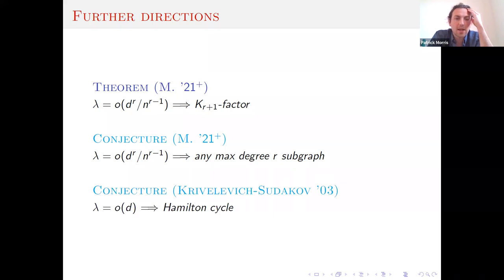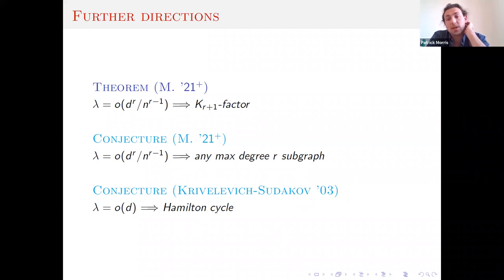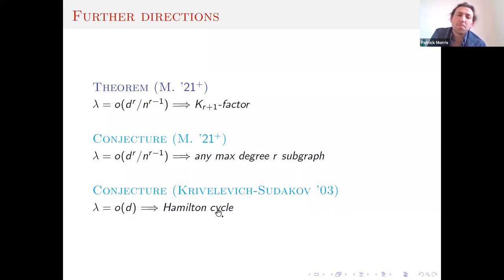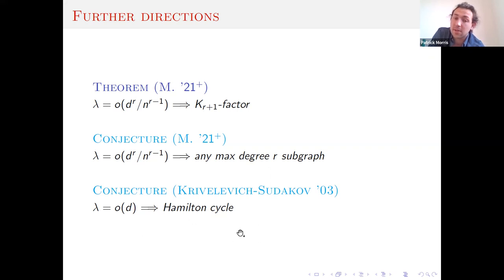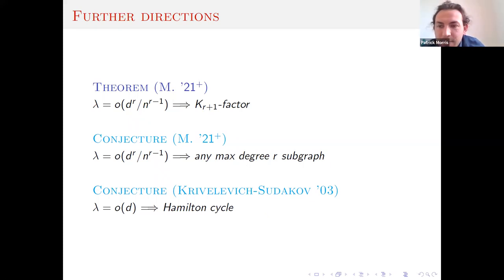As for upper bounds, for larger cliques we can picture that the same condition should give not just a clique factor but any maximum-degree-R subgraph, though I expect this to be much harder than the triangle case since we know the structure of max-degree-two graphs. Finally, for other spanning structures like Hamilton cycles, it was conjectured by Krivelevich and Sudakov in 2003 that only lambda = o(d) is needed, and they gave a condition with a log factor: roughly log squared over log log d. That has been the best known condition to this date with no improvement, so any progress there would be very interesting. Thank you for listening.